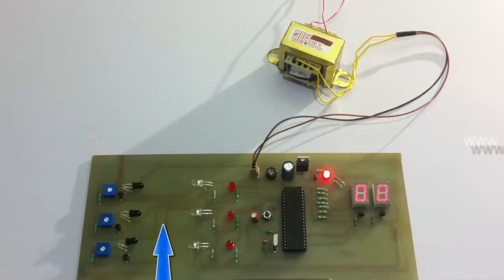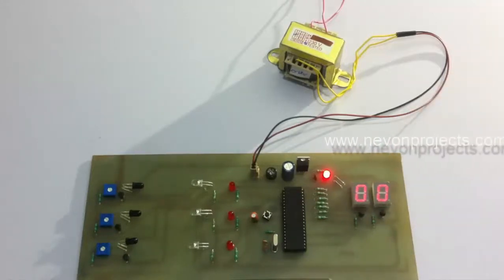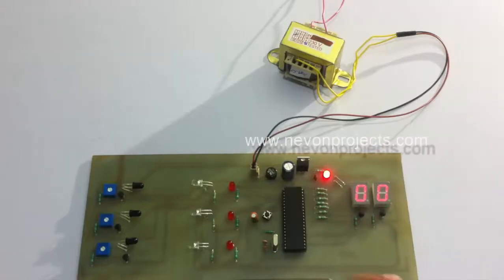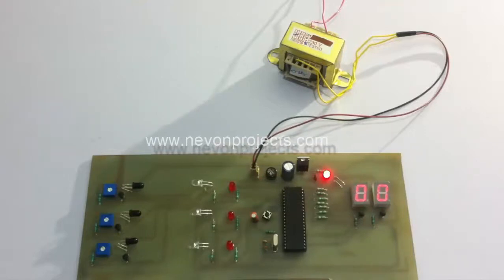The number of objects counted is displayed here on the seven segment display. For this purpose, we are using IR sensors. This is the transmitter and receiver. When an object passes through them, the IR rays get blocked and it detects the object.